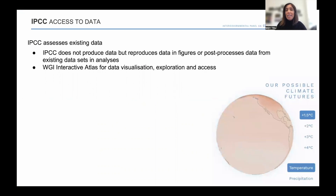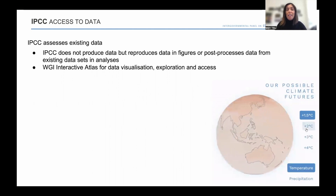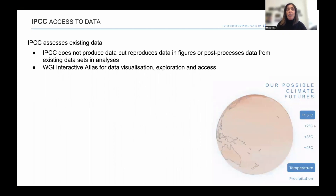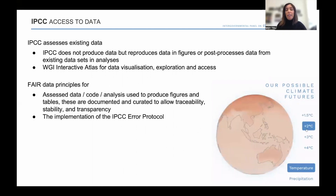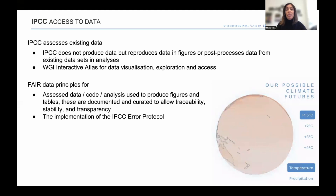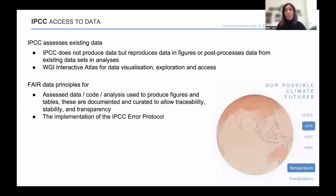In terms of access to data of the IPCC, first of all, the IPCC does not produce data or research as such, but it reproduces data and figures or post-processes data as part of the assessments. The Working Group 1 report has produced a very novel component: the interactive atlas, which is there for visualizing, exploring, and accessing the data that's been assessed in the report. FAIR data principles are implemented for the assessed data, the code that's been produced, and analyses to produce figures and tables. These are all documented and curated with the DDC for traceability, stability, and transparency of the assessment.